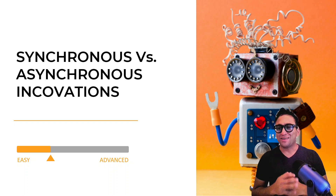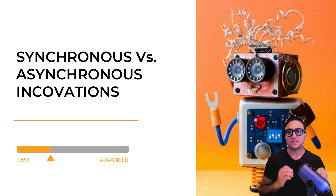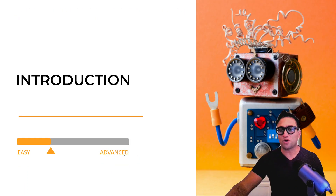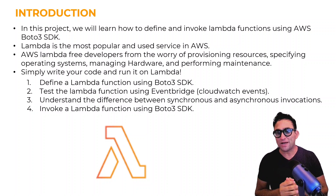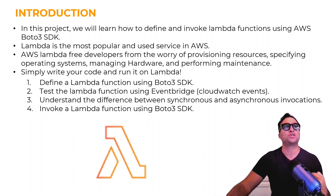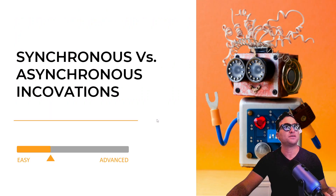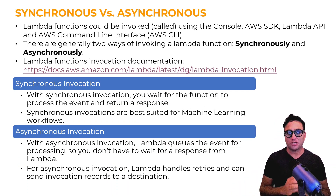Hello everyone and welcome to this lesson. In this lesson we will cover the difference between synchronous and asynchronous invocations. In the previous lesson we covered the introduction and the key learning outcomes — we learned that we're going to define an AWS Lambda function using boto3 SDK and also learn how to invoke that function using boto3 SDK. We also went through the anatomy of the Lambda function.